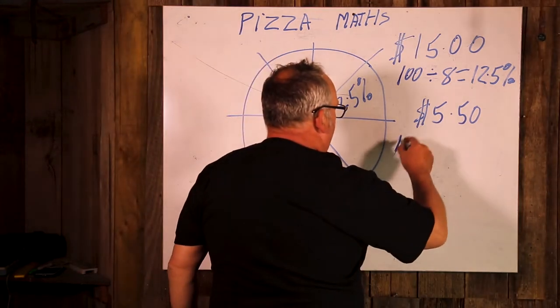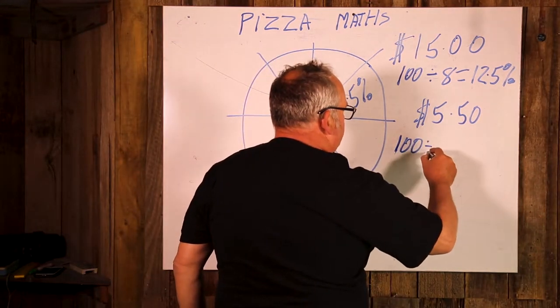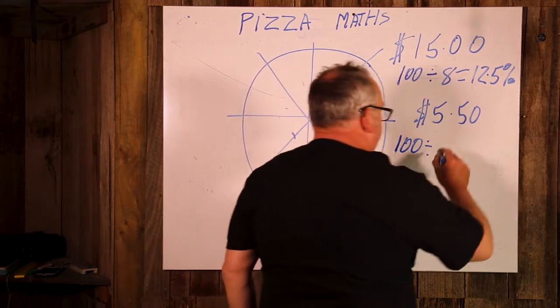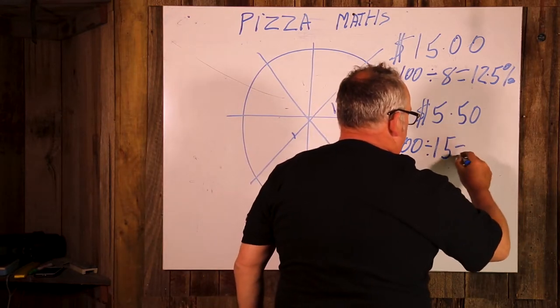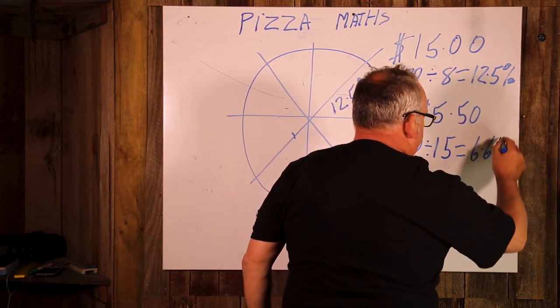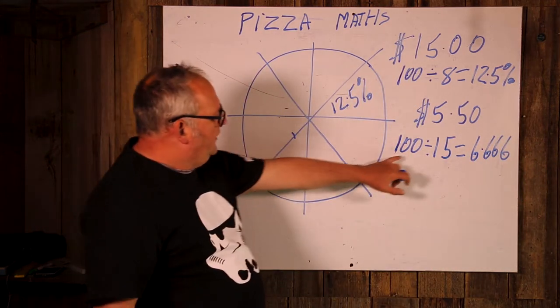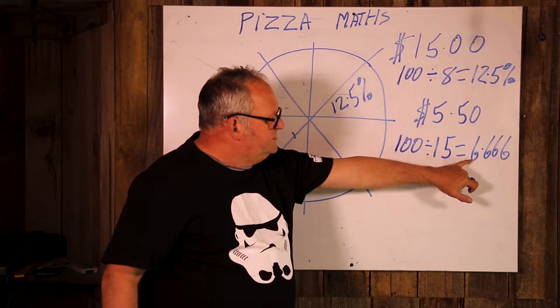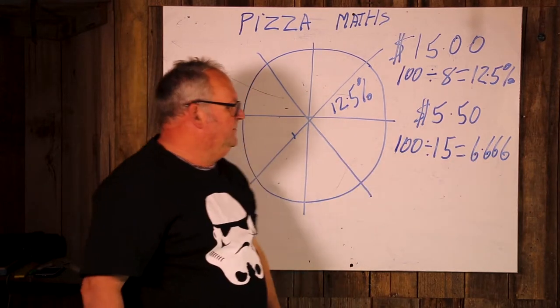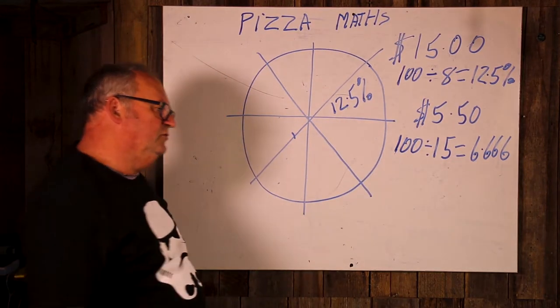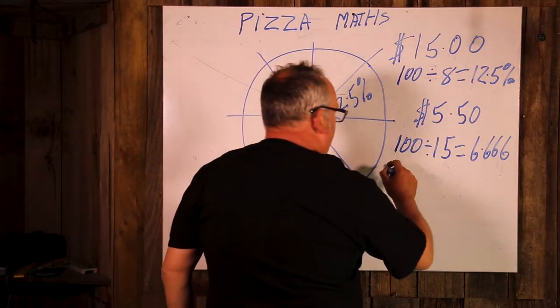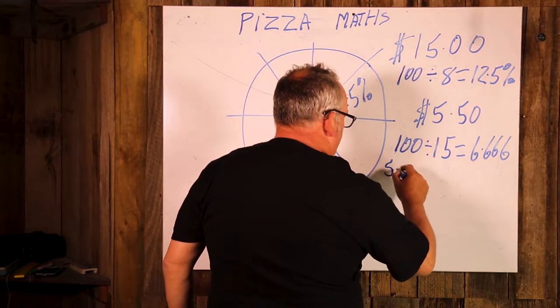So, 100 divided by 15 equals 6.666, devil's number there. So for every dollar is 6.6%. We need to then go 5.5,